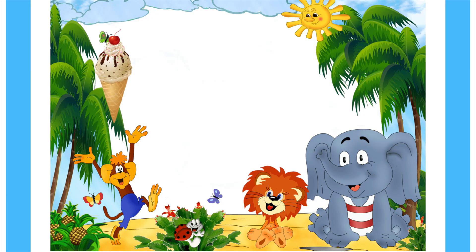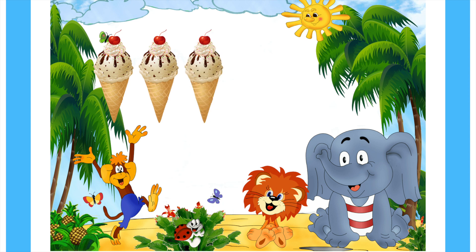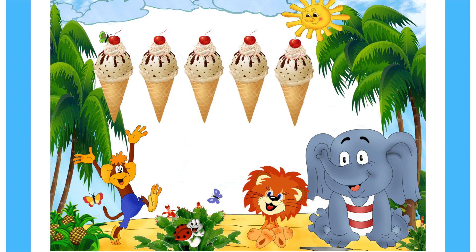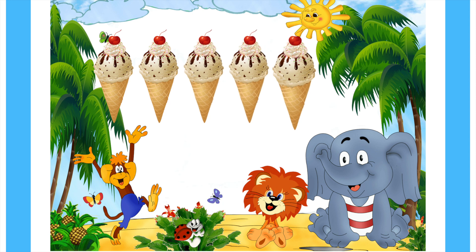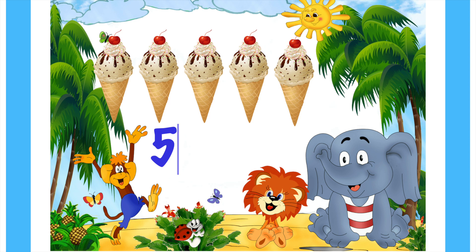Let's see another example. Say you have one, two, three, four, five ice creams and you are going to eat three. Here the subtraction you are going to do is five minus three, which means you have five ice creams and you take away three.